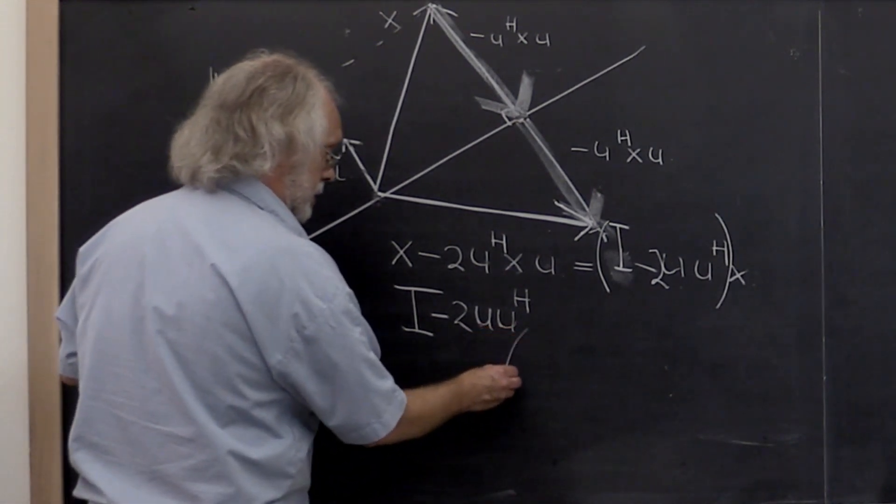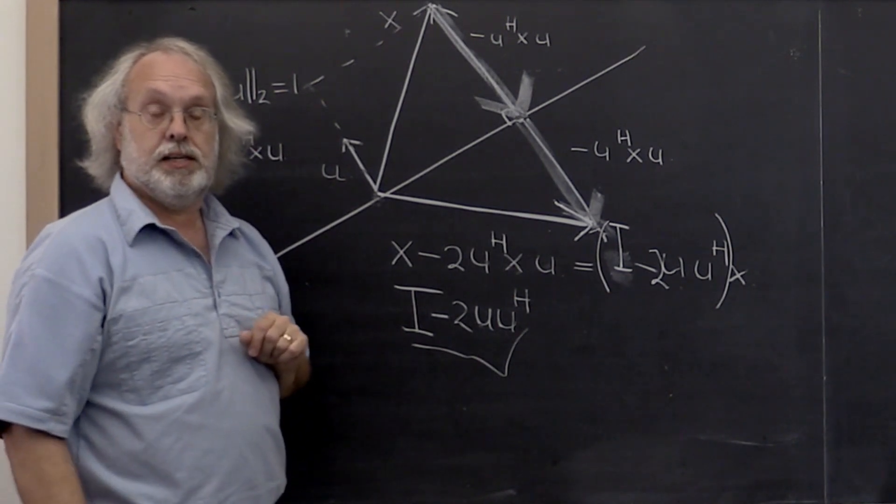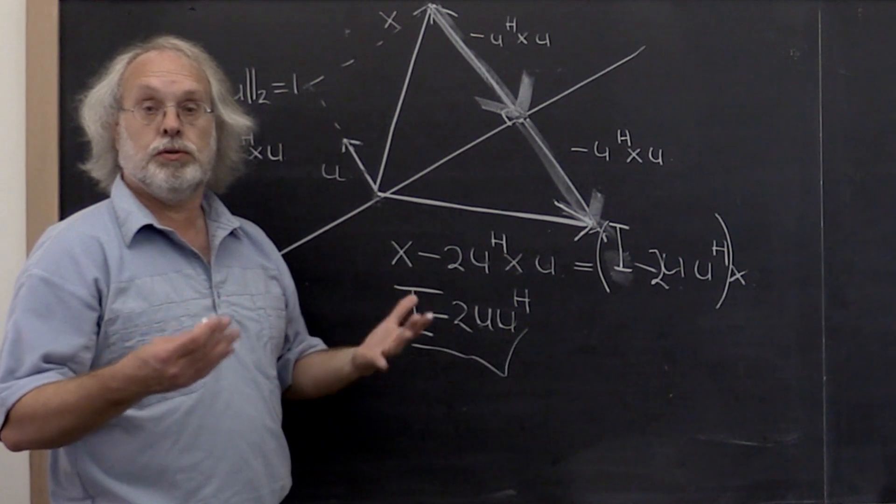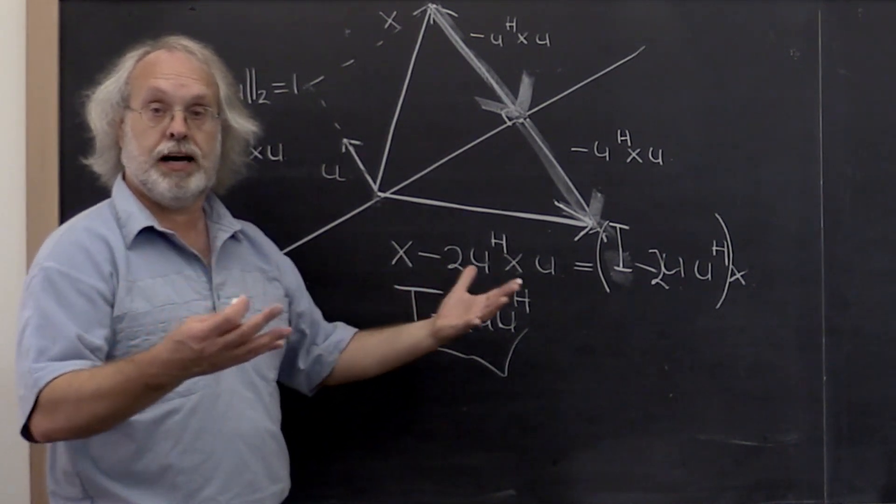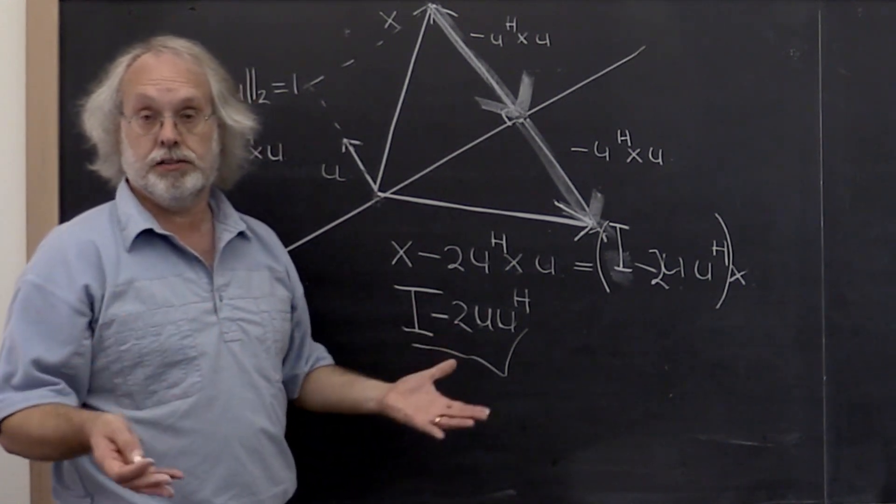This right here is sometimes called a reflector. It's sometimes called a householder transformation, because Householder is the one who discovered how to utilize it effectively. And sometimes it's called a householder reflector.